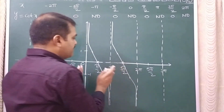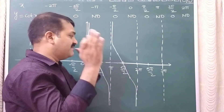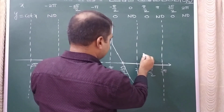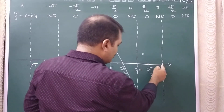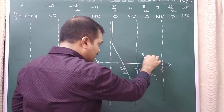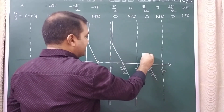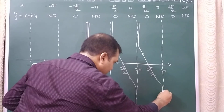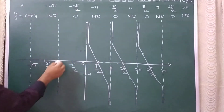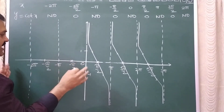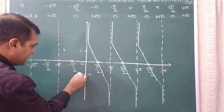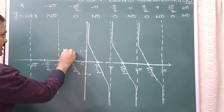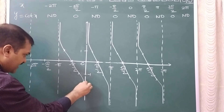Between any two dotted lines, the shape of the graph is going to be the same. At 5pi by 2, cot = 0; between the dotted lines you get 1 and minus 1. Joining these three points, you extend indefinitely upward without touching the dotted line, and extend in the downward direction without touching the dotted line. The same happens for every interval.